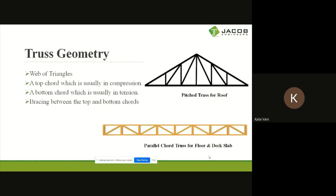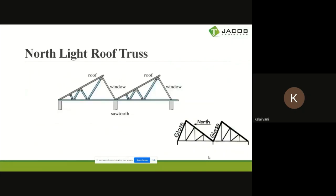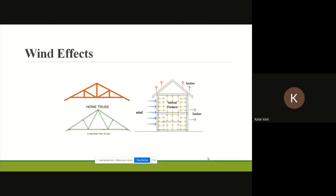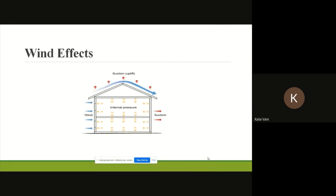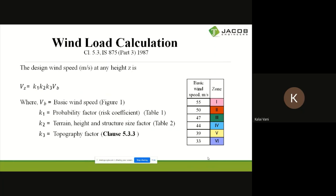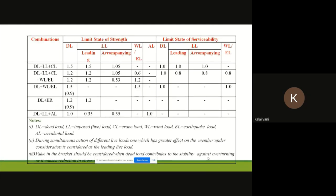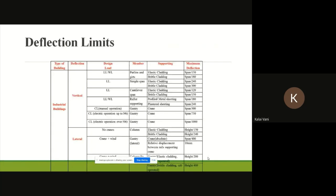We also covered trusses and why trusses are suggested for industrial structures, truss geometry and how it contributes to the load transferring concept, different types of trusses, loads coming onto trusses, the effect of wind, how to calculate wind load, different load combinations and the worst case load combination for designing a steel structure, load factors, and deflection limits for industrial structures for vertical and lateral members.